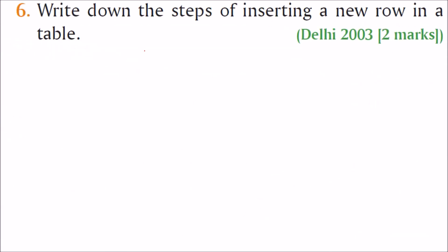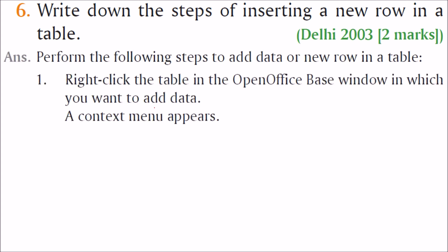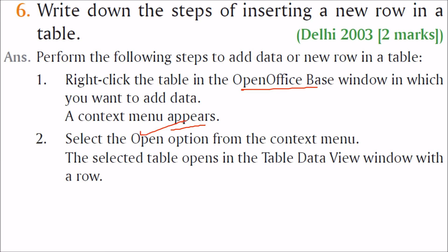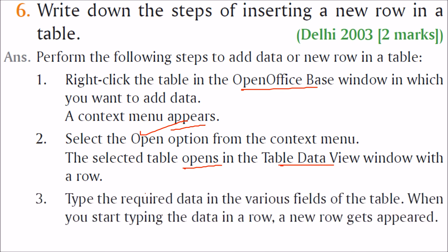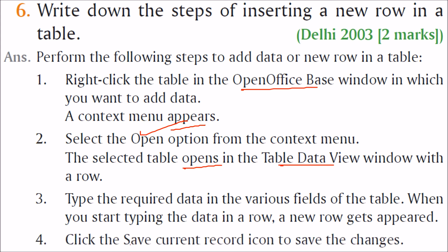Write down the steps to insert a new row in a table. Open the table by right-clicking on it in the Open Office Base window. From the context menu, select Open. The selected table will open in the table data view window. Type the required data in the fields of the row. When you start typing data in a row, a new row becomes available. Click the Save Current Record icon to save the changes.